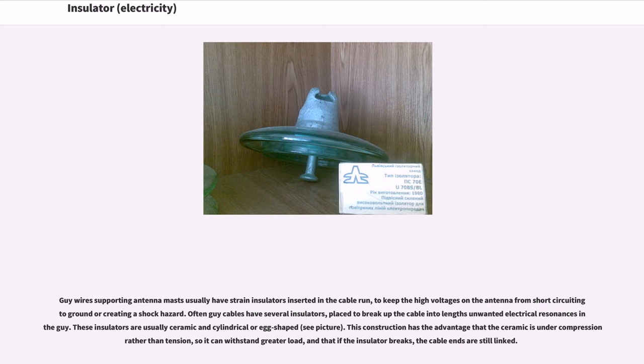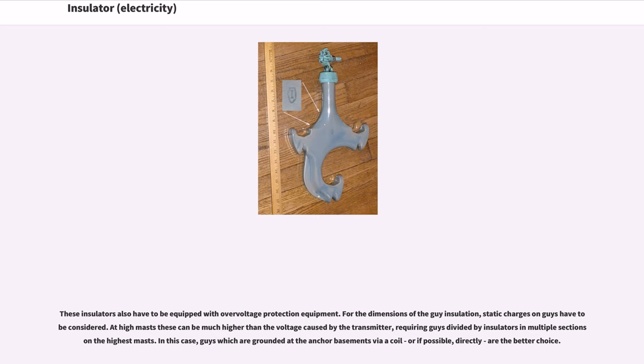Guy wires supporting antenna masts usually have strain insulators inserted in the cable run to keep the high voltages on the antenna from short-circuiting to ground or creating a shock hazard. Often guy cables have several insulators placed to break up the cable into lengths that prevent unwanted electrical resonances in the guy. These insulators are usually ceramic and cylindrical or egg-shaped. This construction has the advantage that the ceramic is under compression rather than tension, so it can withstand greater load, and that if the insulator breaks, the cable ends are still linked. These insulators also have to be equipped with overvoltage protection equipment.